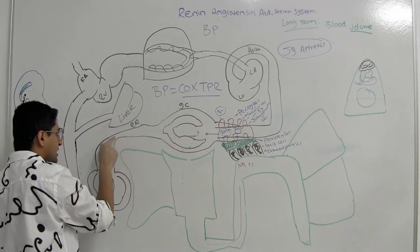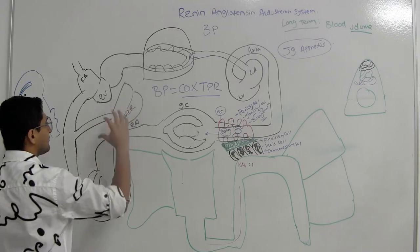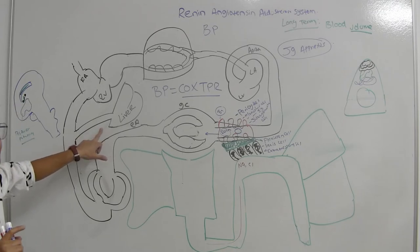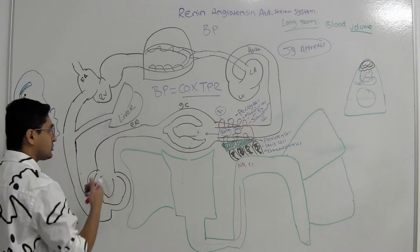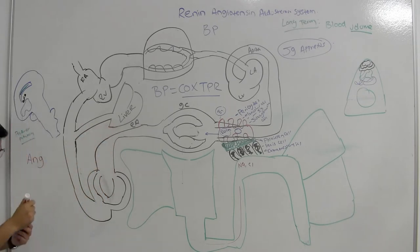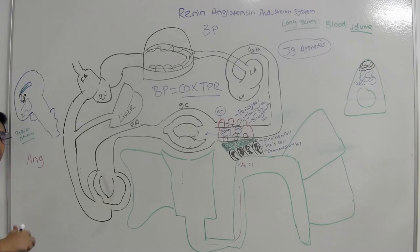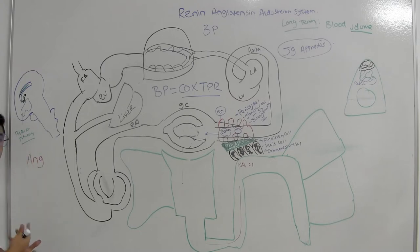Renin travels through the peritubular capillaries into the bloodstream, where it encounters a compound synthesized by the liver called alpha-2 globulin, also known as angiotensinogen. Angiotensinogen is a very large compound with about 485 amino acids, of which only about 12 are functionally active. Levels of angiotensinogen can be elevated by corticosteroids or estrogens.